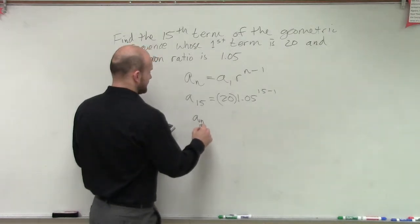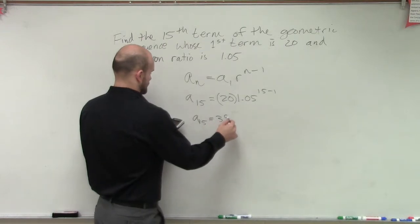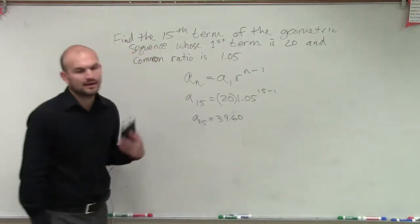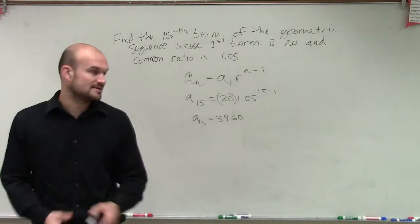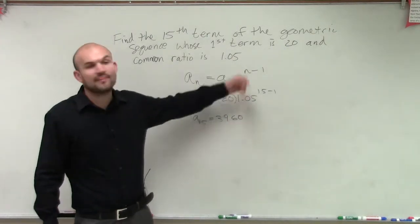So therefore, a sub 15 equals 39.60. I can't tell you how often I get students will multiply 20 times 1.05 and then raise it to the power.